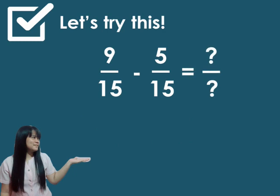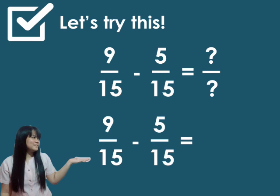9 over 15 minus 5 over 15 is 4 over 15. Let us look at the numerator. 9 minus 5 and 15. So, 9 minus 5 is 4 and 15. So, the answer is 4 over 15. Since 4 over 15 can't be simplified, therefore, the answer is 4 over 15.